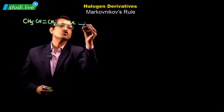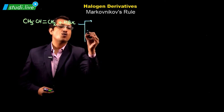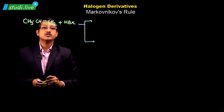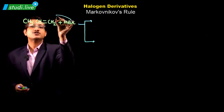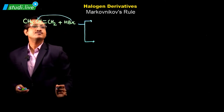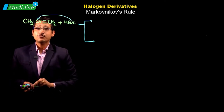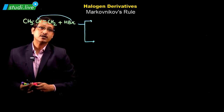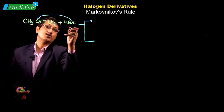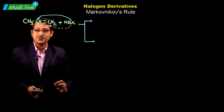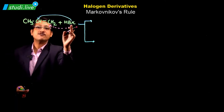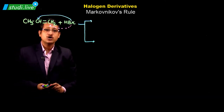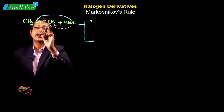What are those two possibilities? In the first possibility, Br is going to get attached to CH. In the second possibility, Br gets attached to the other carbon, that is CH2. So: first possibility — Br attaching to CH; second possibility — Br attaching to CH2.